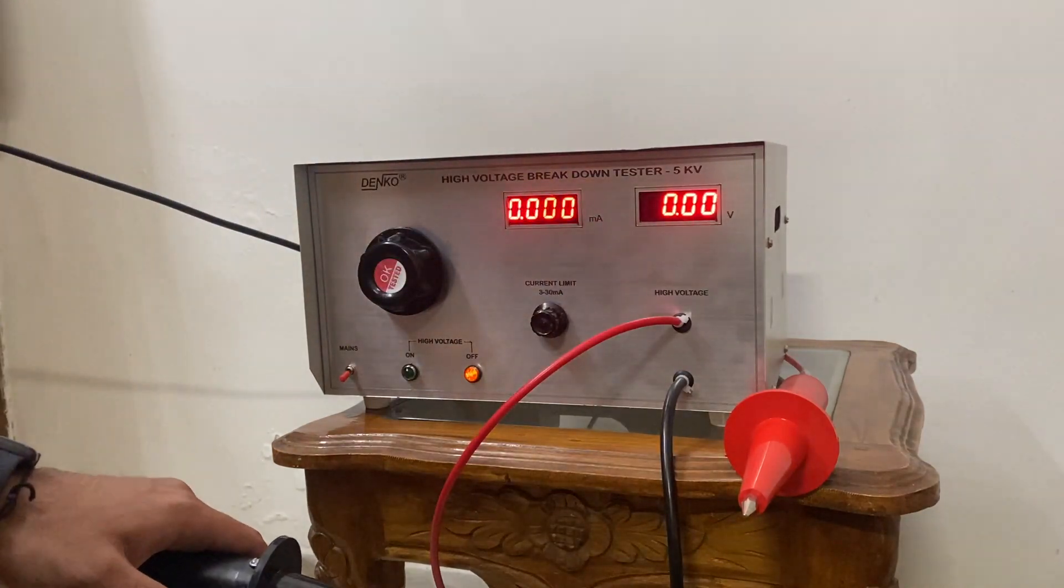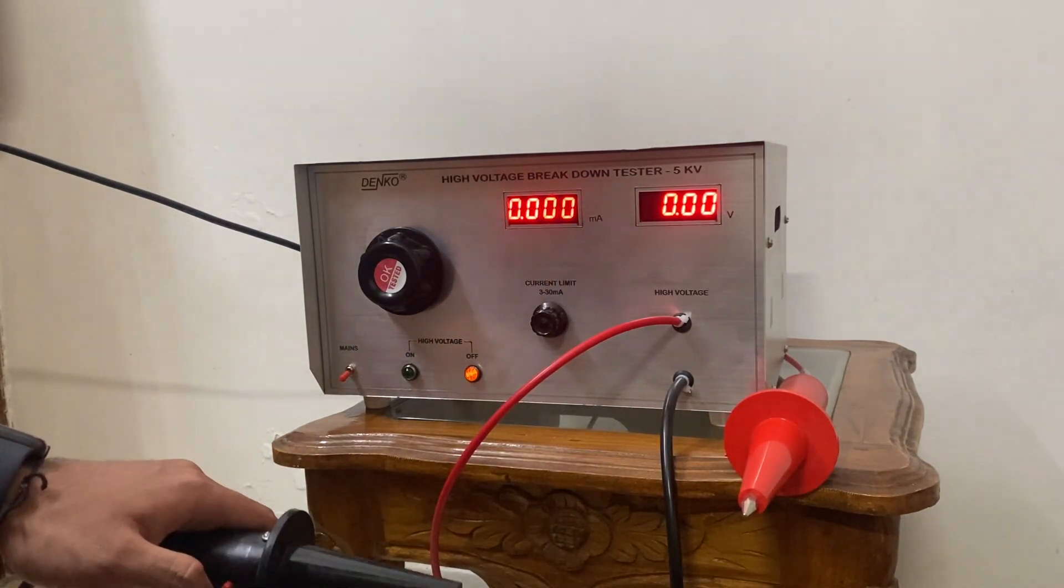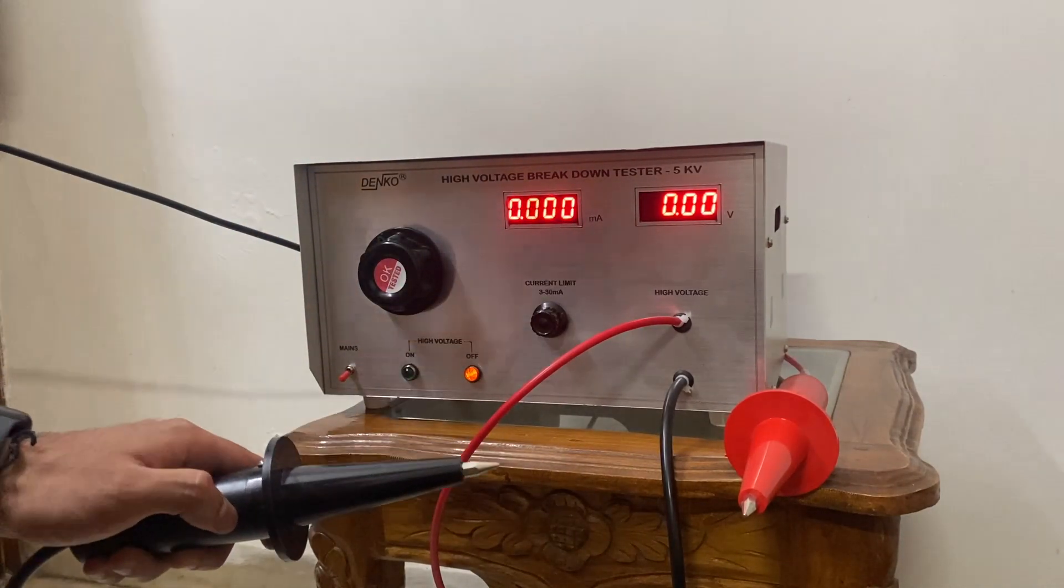Now if you'll notice here it shows us 5 kV which is the maximum voltage capacity of this product, and once I short these two ends it's going to trip instantaneously.